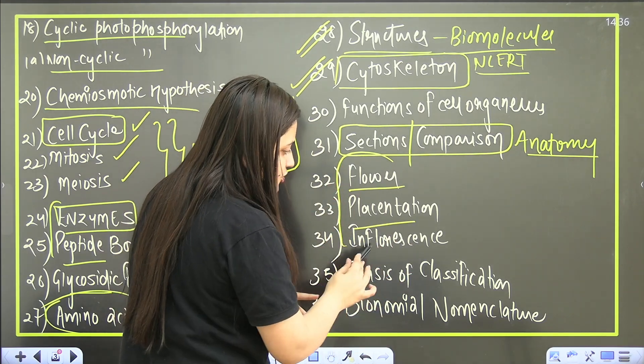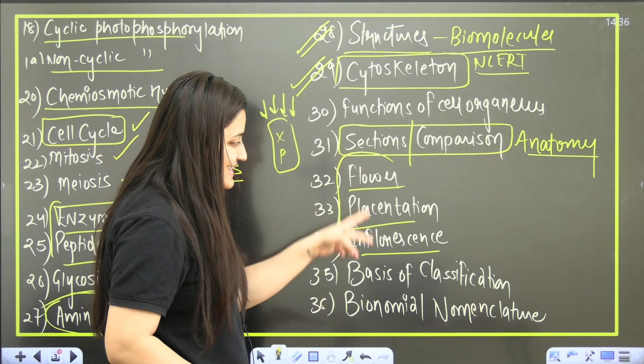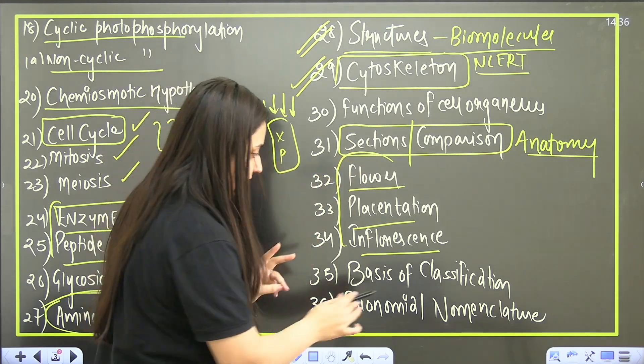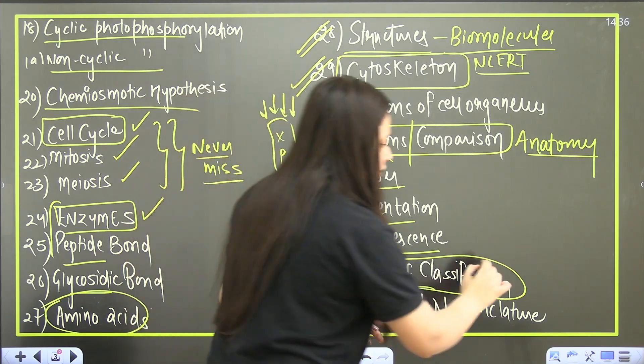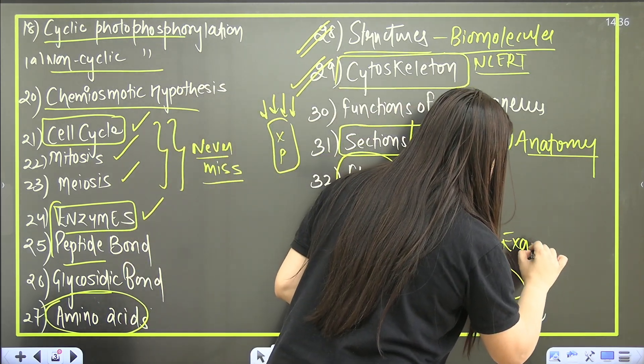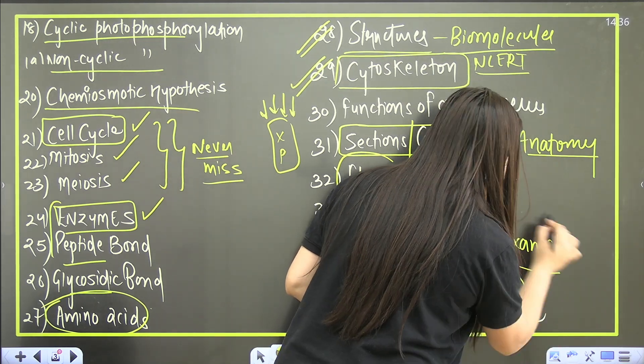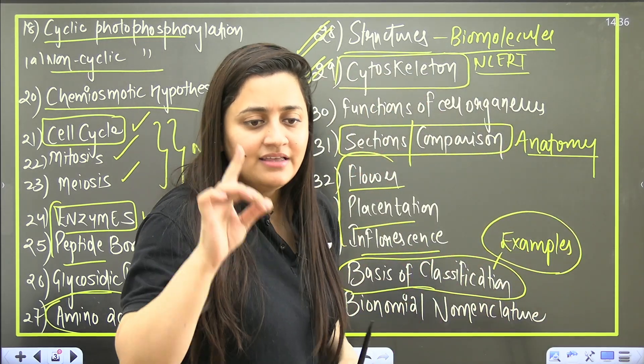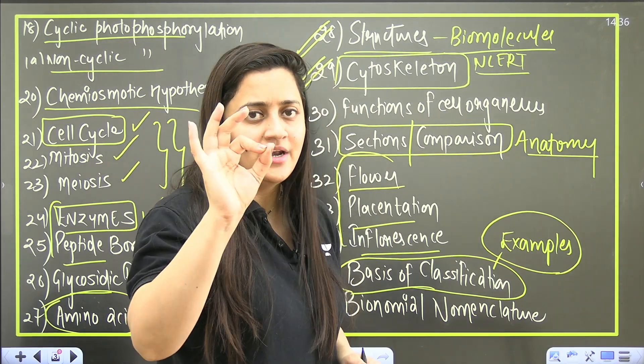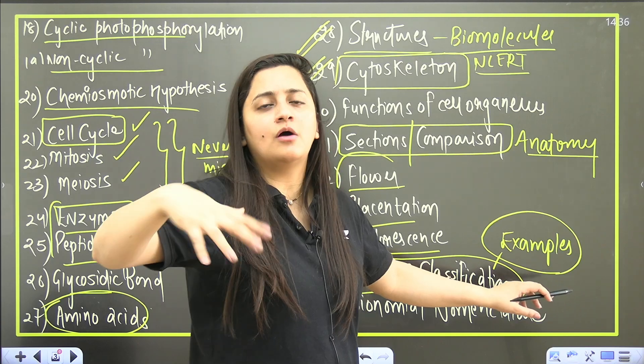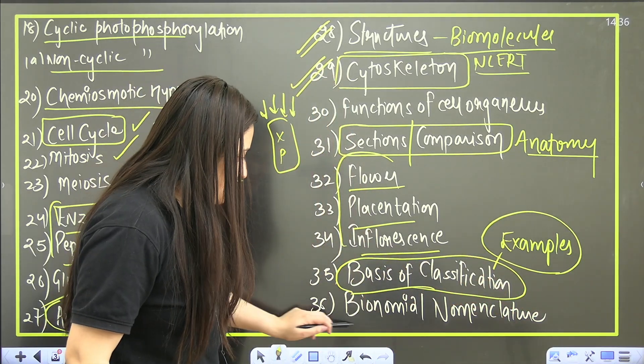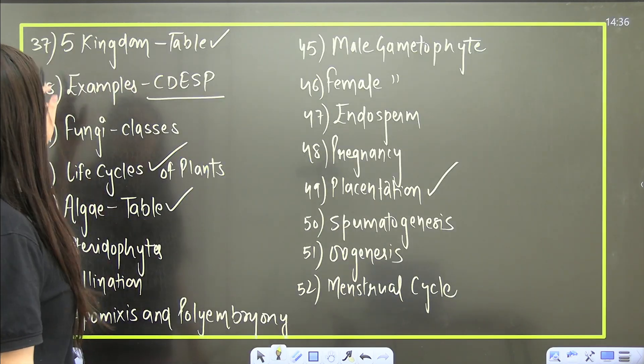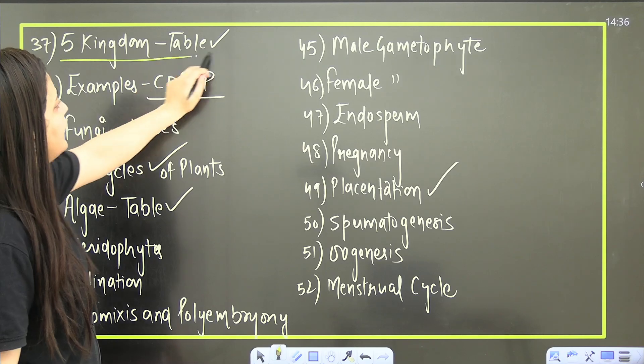Now from morphology, I know it's very lengthy, so many examples are there, but do not miss the flower part, the placentation part, the inflorescence part - these three are the most important topics. Then basis of classification from animal kingdom, and then of course we know that there is no substitute for the examples. For that I'll tell you - just keep on revising. Rather than giving one round of solid revision, please give so many rounds of rough revision.